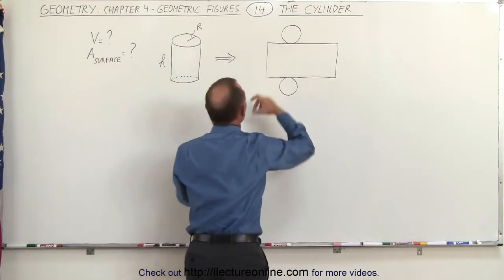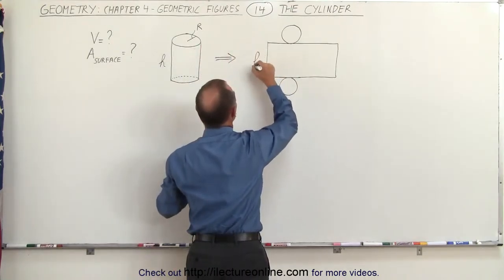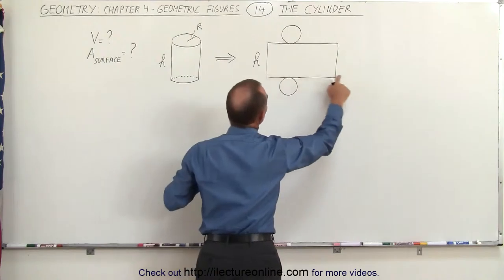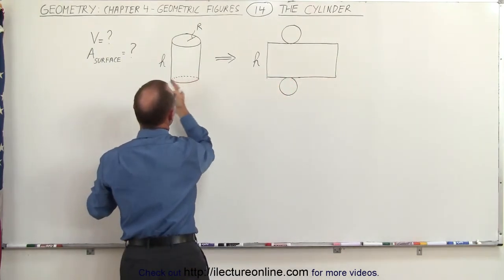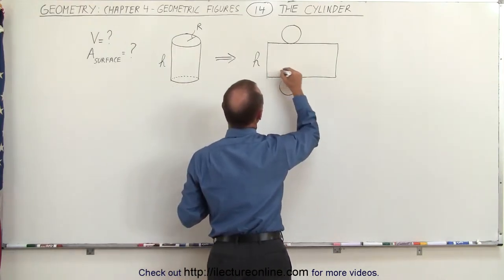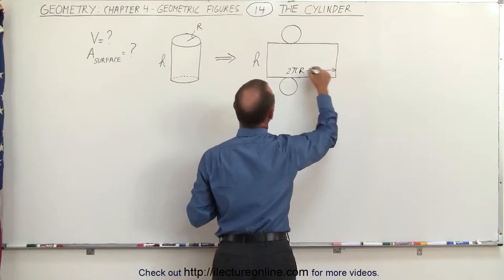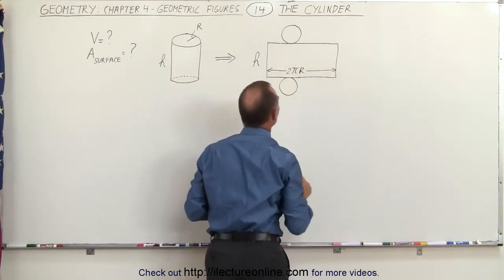Notice then the height would become the width of this rectangular portion. The length of this rectangular portion would be equal to the circumference of the cylinder here. So this distance here would be 2 pi r. From there to there that would be the length of that rectangular portion.